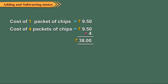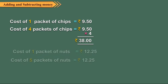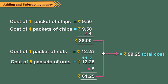Find the total cost of four packets of chips at rupees 9.50 per packet and five packets of nuts at rupees 12.25 per packet. So children, always remember that if you know the price of one item, you can use multiplication to find out the price of several similar items.